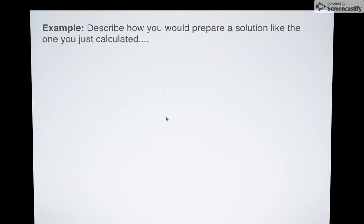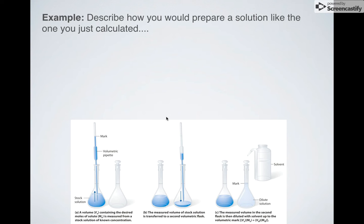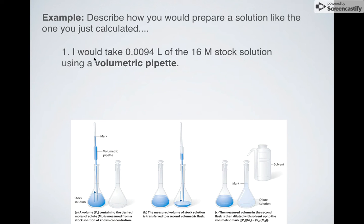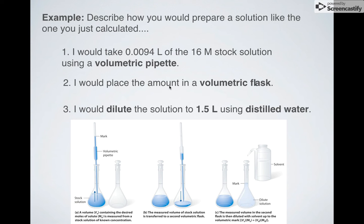If you have any questions about that make sure you ask in class. How would I describe if I was saying hey give me directions on how to prepare a solution like this? What would I need to do? First step I would need to measure a 0.0094 liter amount of a 16 molar stock solution and a lot of times what we use are volumetric pipettes. No volumetric pipette in the world is going to be like 0.0094 liters but there are plenty of little volumetric pipettes that we can use in lab. Next up I would put that in a cleaned out volumetric flask. I would then dilute the solution from my initial amount to 1.5 liters using distilled water. So you can think of this as step one, this is step two, this is step three. And that's how you would make a solution like this.